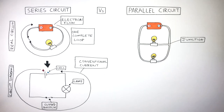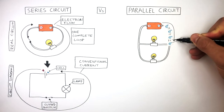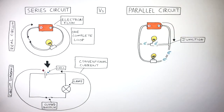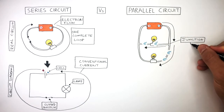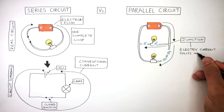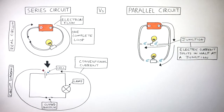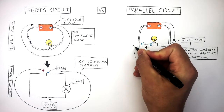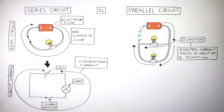Here is a junction in the circuit where the circuit splits into two different loops. The cell, which stores the chemical energy, pushes the electrons out of the negative terminal. The electrons flow towards the junction, where half of the electrons flow down one route and the other half flow down the other, as the electric current splits in half at a junction. These electrons continue flowing down their different routes, and when they come to the junction, the electric current becomes the same as which left the cell.